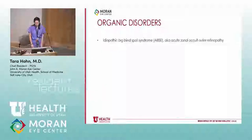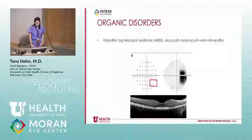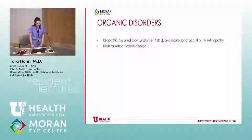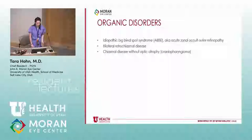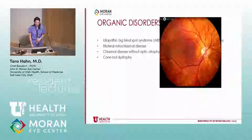Idiopathic big blind spot syndrome, or acute zonal occult outer retinopathy, which are on the same spectrum, give you a large blind spot. On macular OCT you can see stippling of the ellipsoid zone where it's disrupted, especially near the optic nerve. Bilateral retrochiasmal disease — you won't see anything really on exam, so be aware and look for it especially if the history suggests it. Chiasmal disease without optic atrophy, like craniopharyngioma, and cone-rod dystrophy — later on the macula looks abnormal, but early on if you're not looking closely it might be hard to tell.